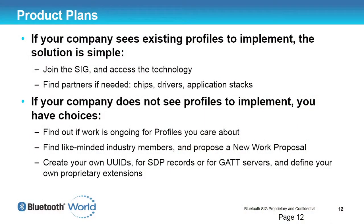If you don't see a profile in that list of adopted profiles, then what do you do? That's actually the more interesting case, because first you need to work out what is going on in the Bluetooth SIG. When you join, you can see the list of working groups and what they are chartered to do. You can also look at the new work proposals — there's a page on the website that lists them. A new work proposal is a way of getting work started in the SIG: as long as three other companies support you, you can create a study group and start working on that specification.